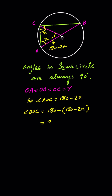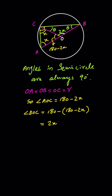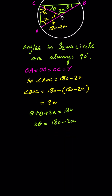This means that angle BOC is equal to 2x. OB is also equal to OC, which is the radius. This means this angle equals this angle — let's say this angle is theta, and this angle is theta as well. Theta plus theta plus 2x equals 180 degrees, because the sum of angles of a triangle is always equal to 180. So 2 theta equals 180 minus 2x.